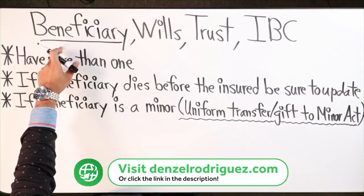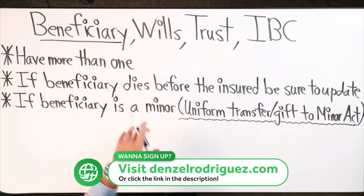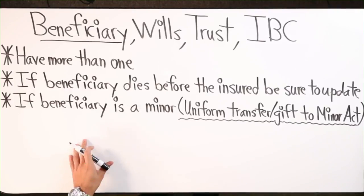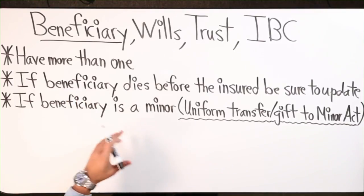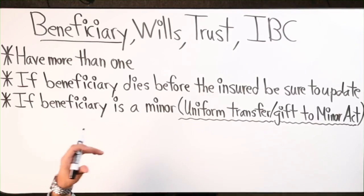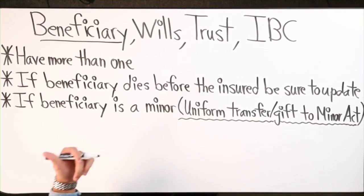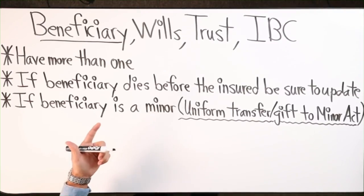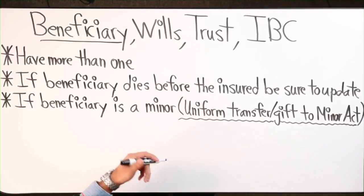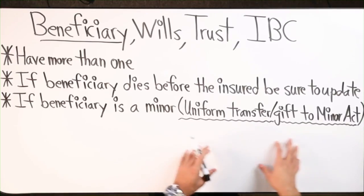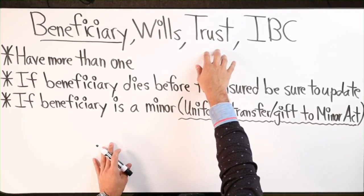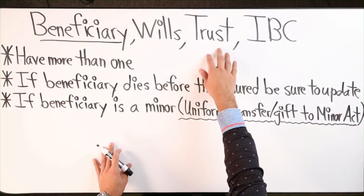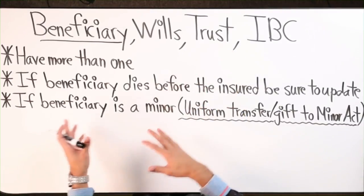The first thing I want to discuss is the beneficiary. When you first start your life insurance policy, one of the things you'll have to do is name a beneficiary. You can name a spouse, family member, friend, business partner, an organization, or a trust. If you are someone that has a trust already in place, it would be wise to have your trust as your beneficiary.